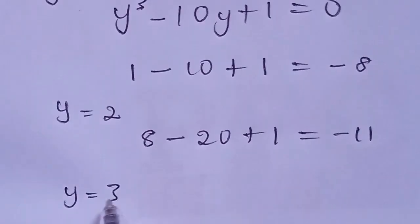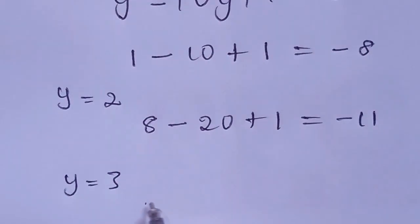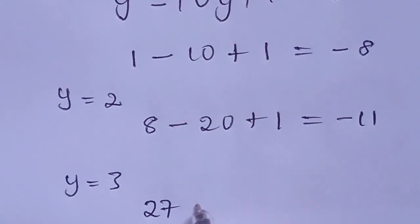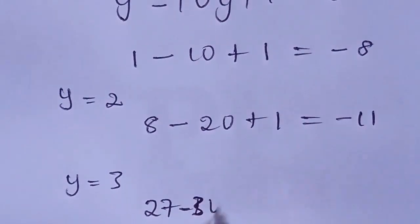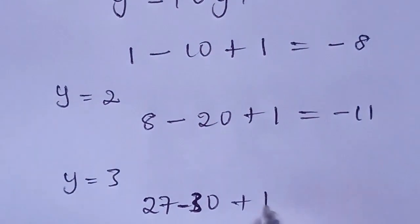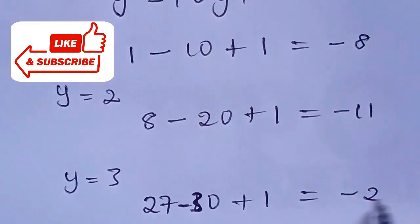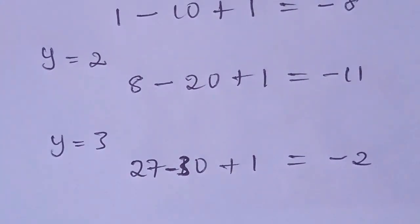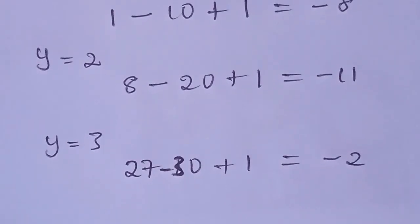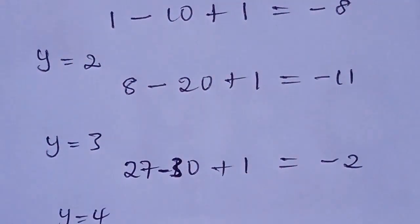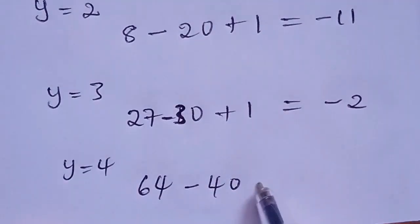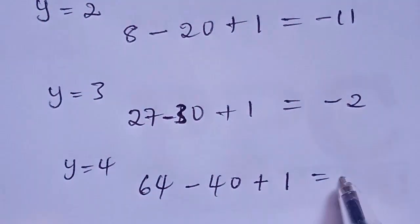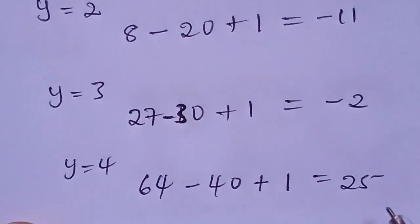If we substitute y equal to 3, the equation becomes 27 minus 30 plus 1, which gives us minus 2 — still a negative value. If we substitute y equal to 4, we get 64 minus 40 plus 1, and simplifying this gives us 25, a positive value.